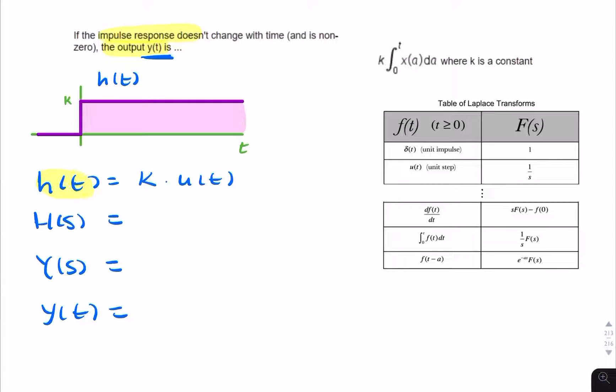So starting from the impulse response, you can find the transfer function, then find Y in the S domain, and then Y in the T domain.